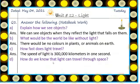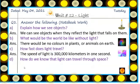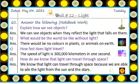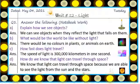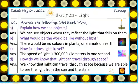How do we know that light can travel through space? We know that light can travel through space because we are able to see the light from the sun and the stars.